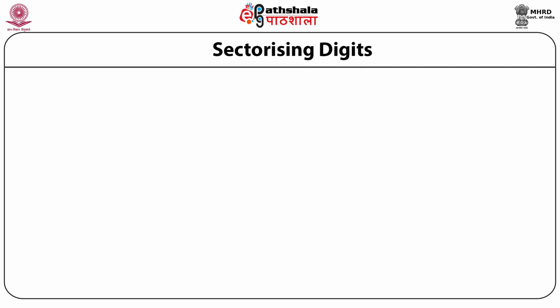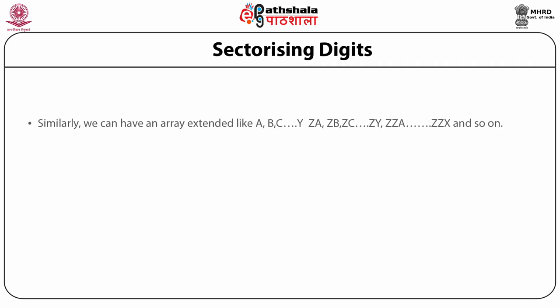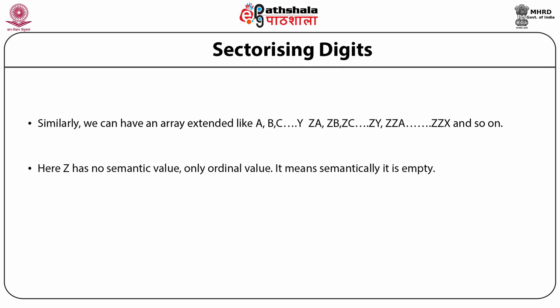Similarly, the same principle can be applied when alphabets are used instead of numerals in the notation. We can extend an array using alphabets as a, b, c, d, e, f, g and so on up to y. After y there is no place, so new subjects can be given notations za, zb, zc, zy, zza, zzb, zzc and so on. We can go on repeating. Here, z has no semantic value — only ordinal value — meaning it is a semantically empty digit.